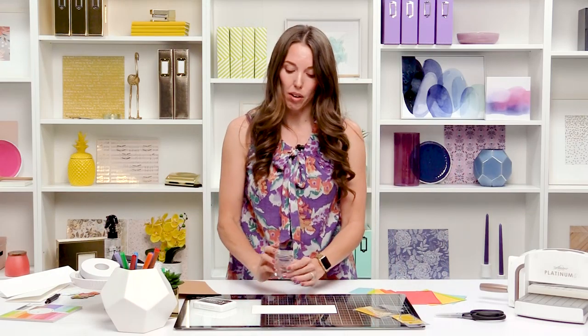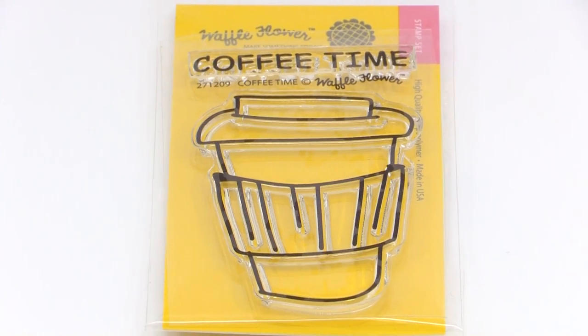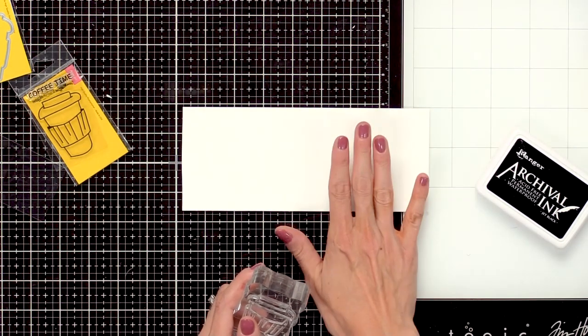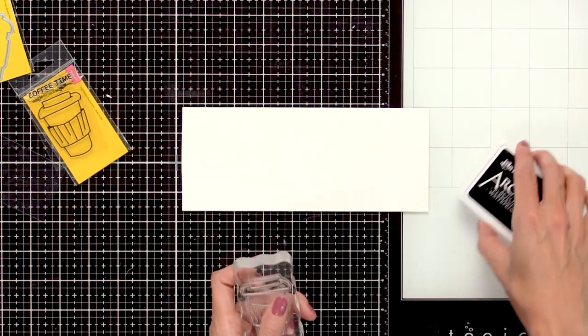We're going to paper piece this coffee cup together. So the first step is stamping the coffee cup 5 times onto this white cardstock because we're going to create 5 coffee cups.